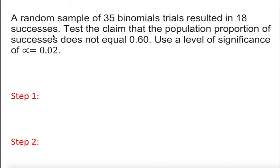A trial resulted in 18 successes. The test claims that the population proportion of successes does not equal 60 percent. Use a level of significance of alpha equal to 0.02. From the problem, we note a random sample of 35, so n = 35.